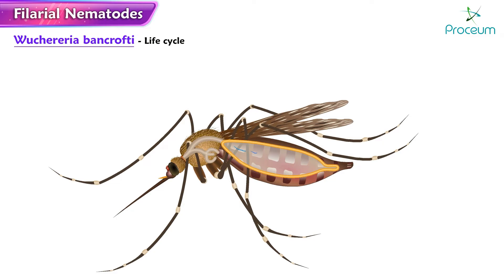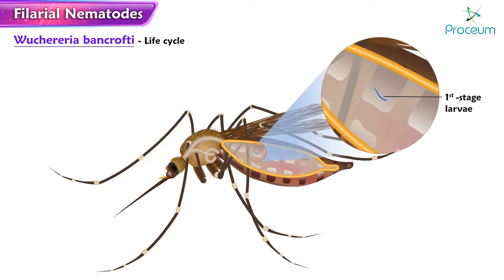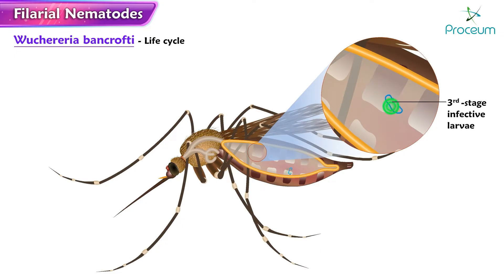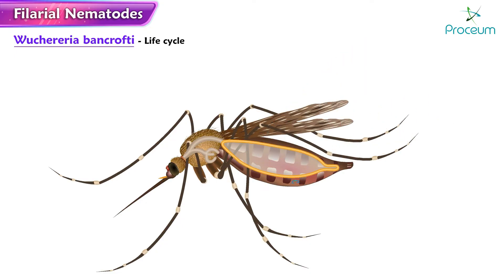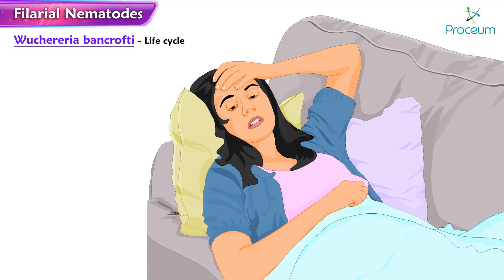There, the microfilariae develop into first-stage larvae and subsequently into third-stage infective larvae. The third-stage infective larvae migrate through the hemocele to the mosquito's proboscis and can infect another human when the mosquito takes a blood meal.